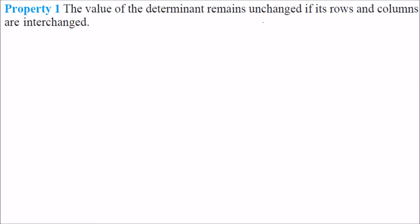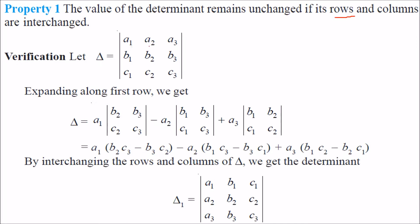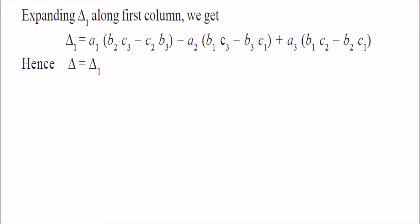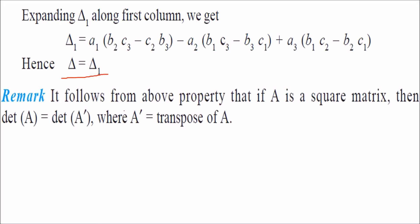Property 1: the value of a determinant remains unchanged if the rows and columns are interchanged. That means if you have a matrix with a determinant and you interchange the rows and columns — that is, change rows into columns and columns into rows — you are making it the transpose. When you transpose it, both results are exactly the same. So it follows that if A is a square matrix, then det(A) = det(A'), where A' is the transpose of A.